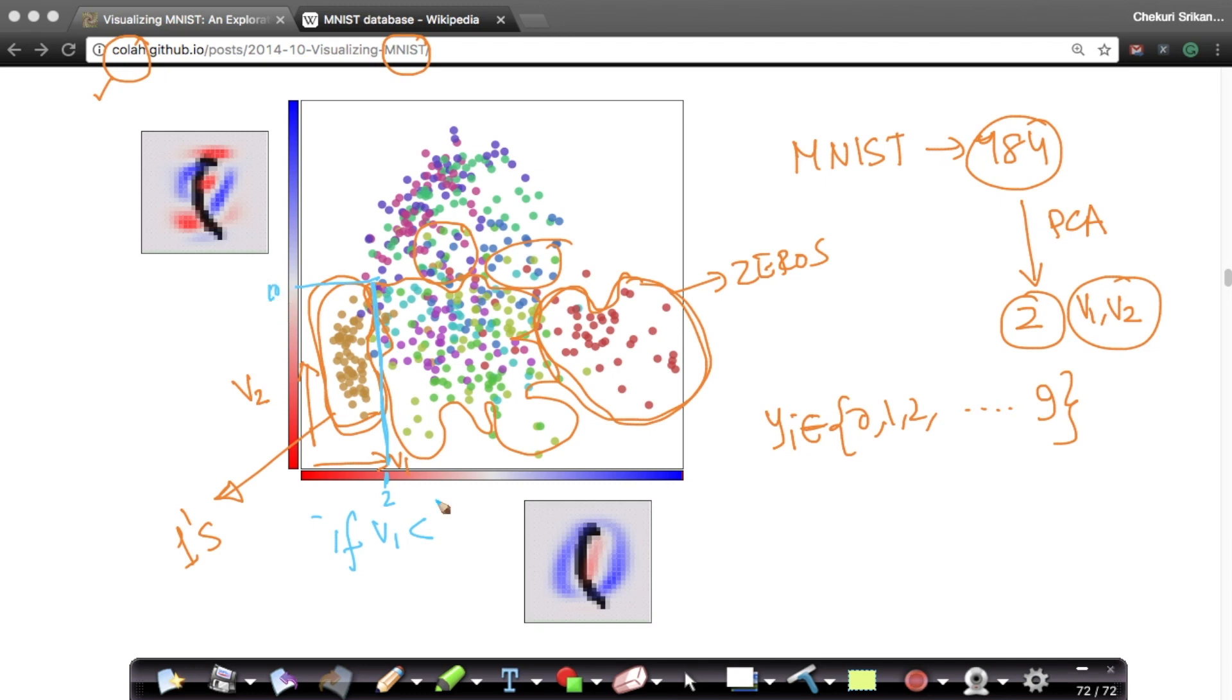I can say that if V1 is less than some value here, let's say this value was 2 and this value was 10. If V1 is less than 2 and V2 is less than 10, then I know that my data point, I know that my yi equals to 1. If data is well separated, even zeros, I can actually put a bounding box here.